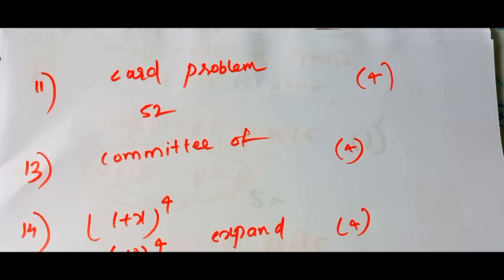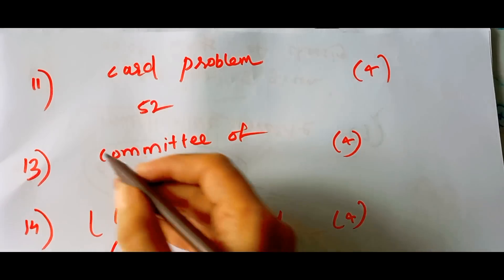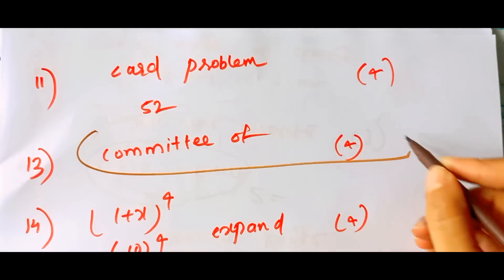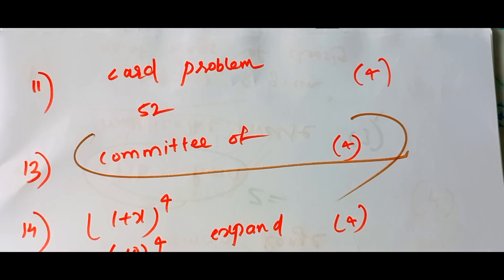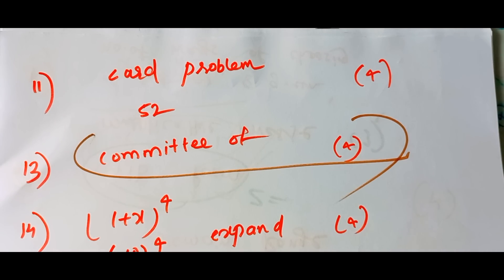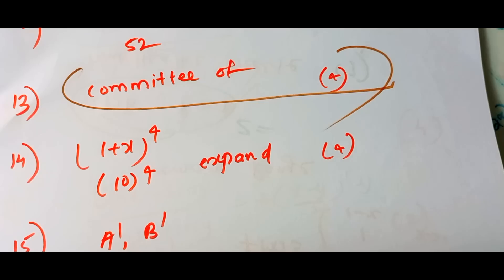Permutation and combination — committee type. You can look for a committee: a committee of 6 people who are to be selected, or in other committee problems as well, such as men-type problems.